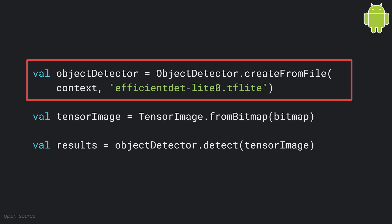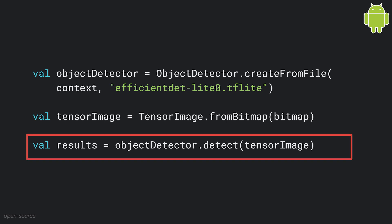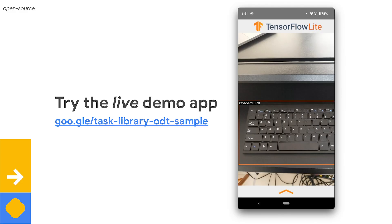Task Library supports many different platforms, including Android and iOS smartphones. Integrating a pre-trained model into a smartphone application is just as easy. You start by creating an object detector with the model downloaded from TensorFlow Hub, then create a tensor image object from the Android bitmap. Finally, you call the detect method and get back the list of detected objects, similar to what you get from the Python API. Here's a demo of using Task Library in an Android app — the model can detect general objects such as mouse, keyboard, or water bottle. You can clone the demo app from GitHub and try it out yourself.